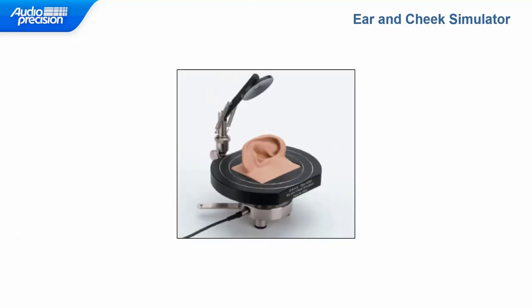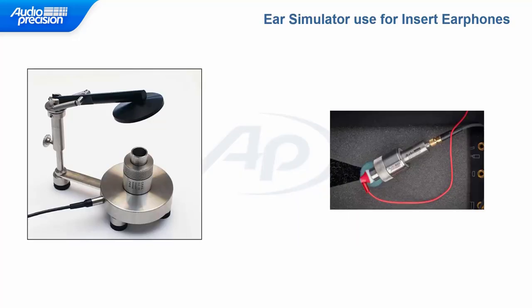Here is another type of test fixture called an ear and cheek simulator. It's functionally equivalent to the headphone test fixture but only has one ear simulator, so it can be used to test one earphone at a time. Here's a similar fixture without the anatomically shaped pinna, which is useful for testing insert-type earphones that get inserted directly into the ear canal. As an alternative, you can also use the ear simulator without the fixture.